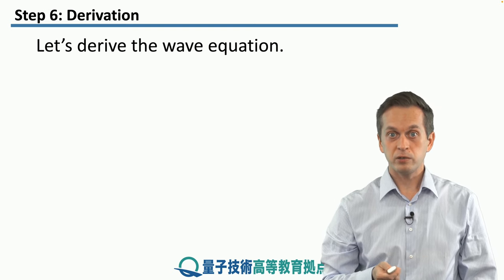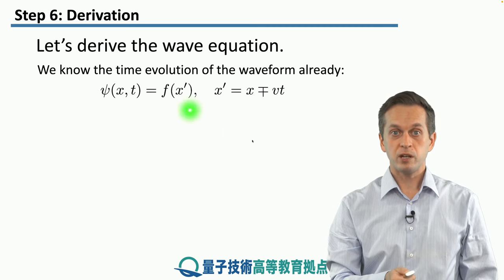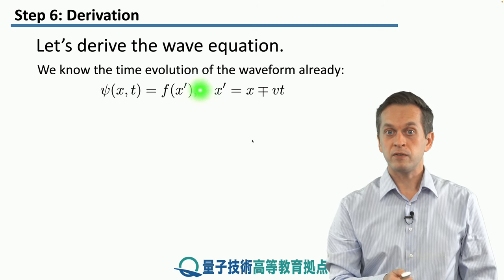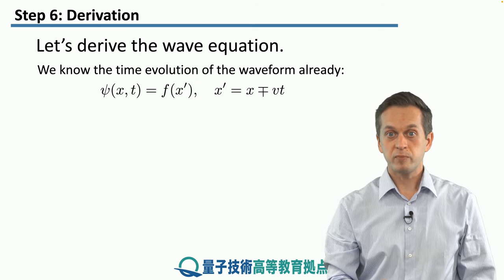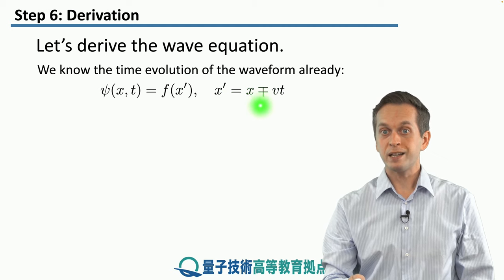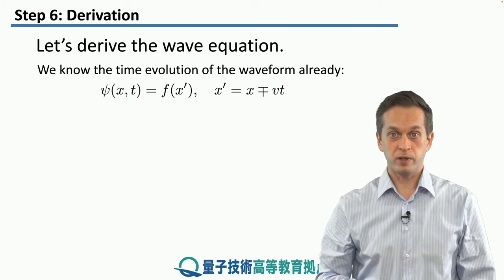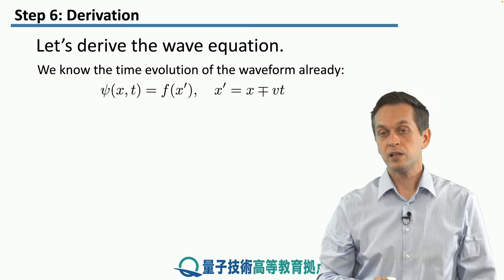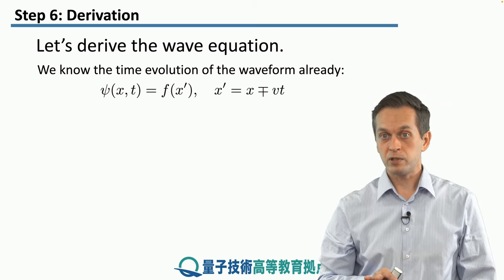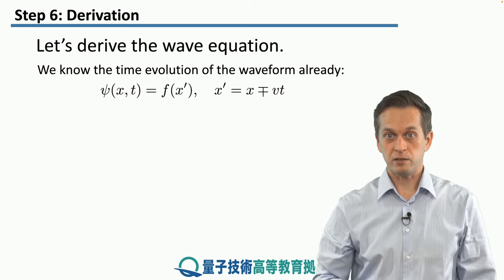We know how to describe a traveling wave from one of the previous steps. The wave can be described by some function f of x prime, where x prime is a combination of x and t. Specifically, x prime equals x minus or plus vt, where v is the speed of propagation. It's x minus vt when the wave travels in the positive direction, and x plus vt when it travels in the negative x direction.